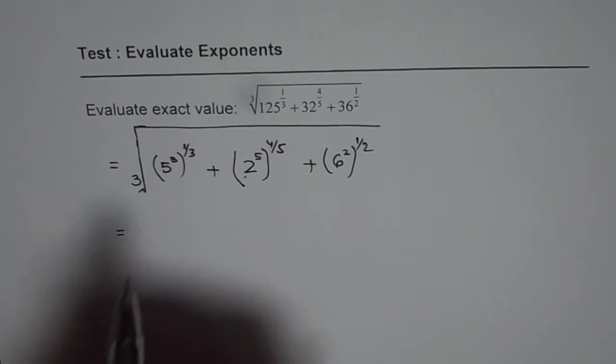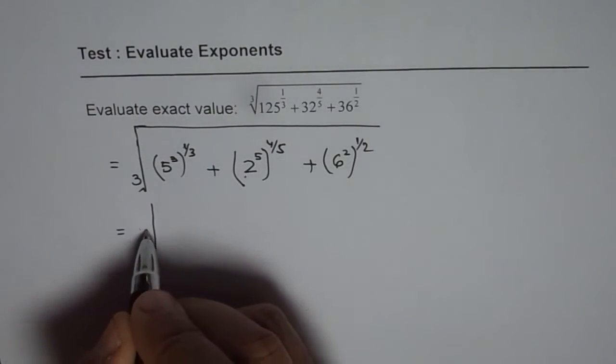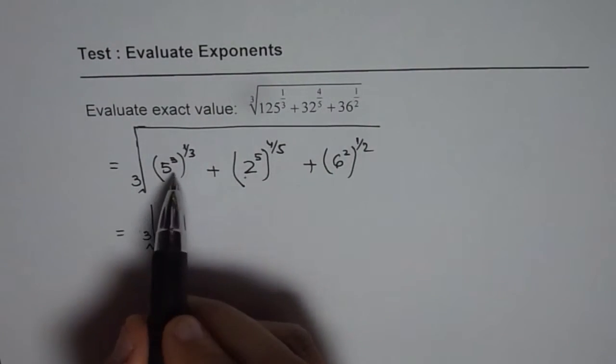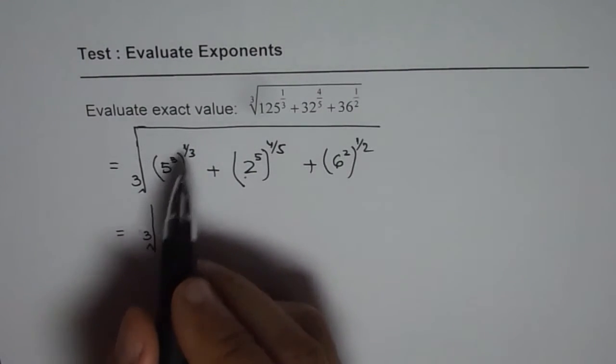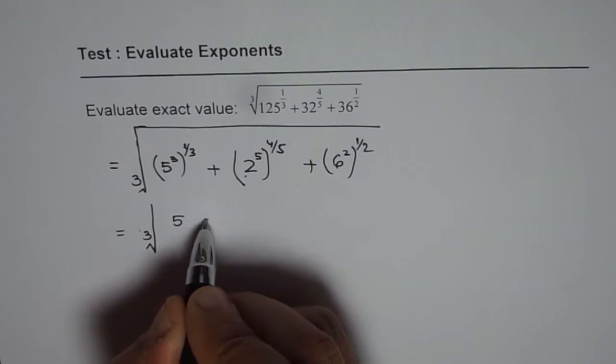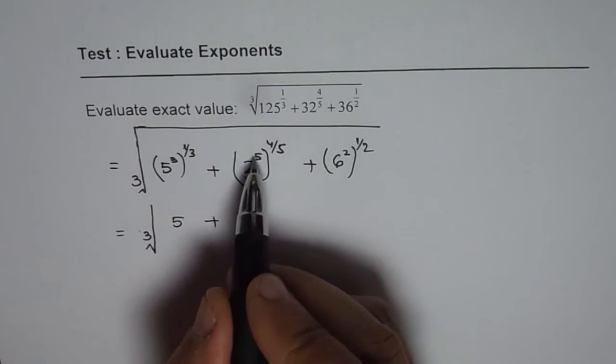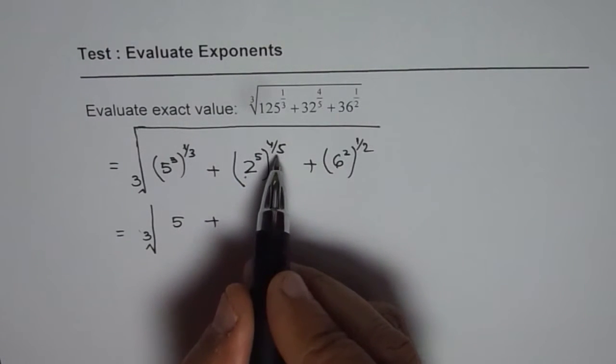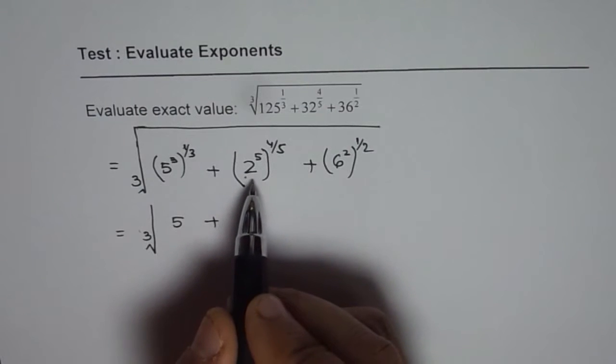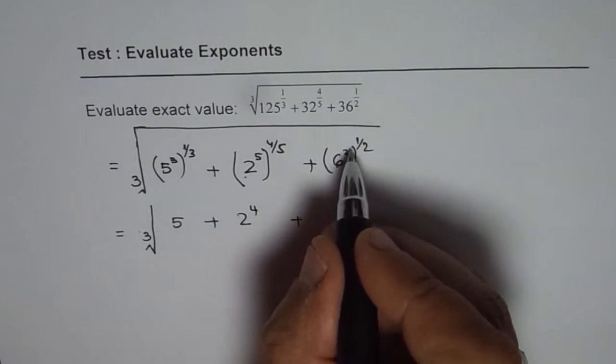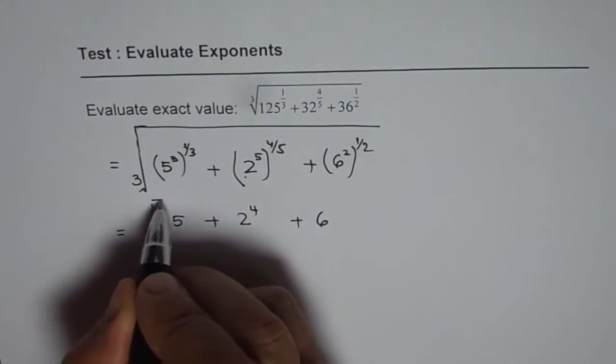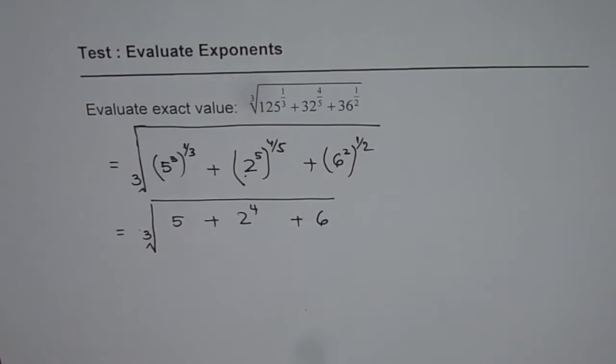Now let us see the next step. So next step is we will do inside function first. When you multiply 3 by 1 over 3 you get 1. So 5 to the power of 1 is number 5. Here, 2 to the power of 5 times 4 over 5, when you multiply them, you get 2 to the power of 4. In this case, you get 6 to the power of 1 which is 6. So that is what you get.